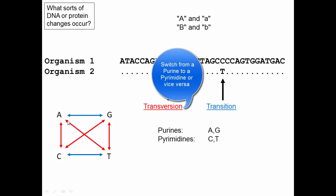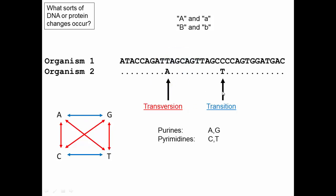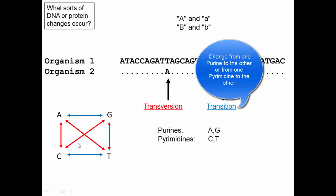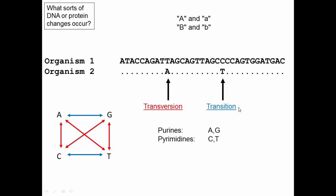A transversion is any mutation from a purine to a pyrimidine or the converse. That's distinguished from this individual having a thymine as a new mutation instead of cytosine — a change from one pyrimidine to the other. Changes from a purine to a purine or a pyrimidine to a pyrimidine are called transitions. Chemically, transitions will be more likely to happen per generation than transversions, and we actually tend to see higher rates of transitions than transversions.